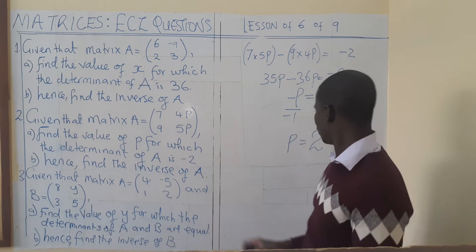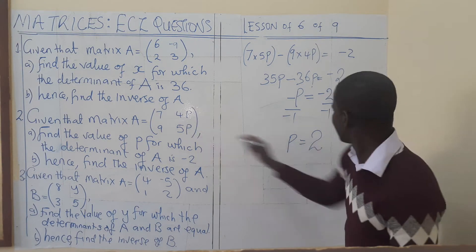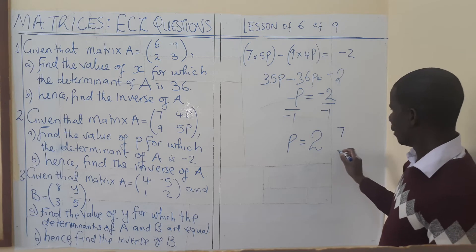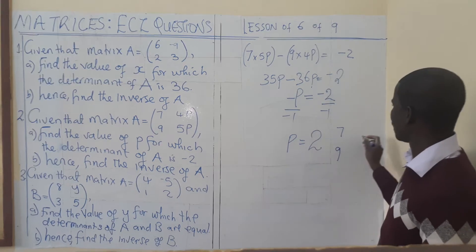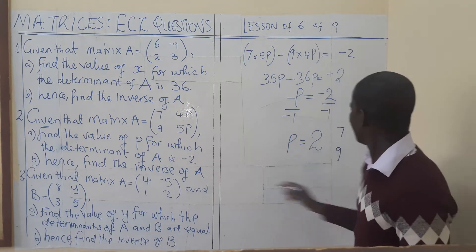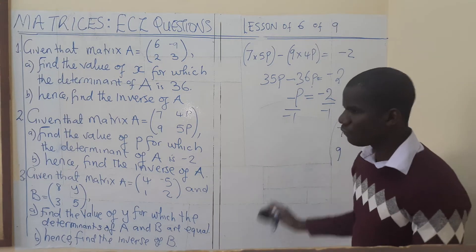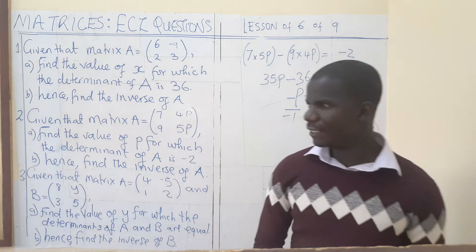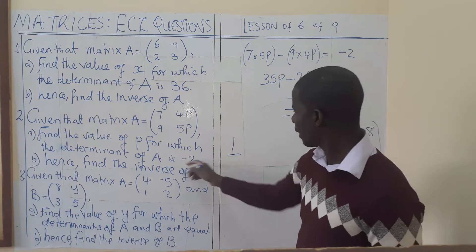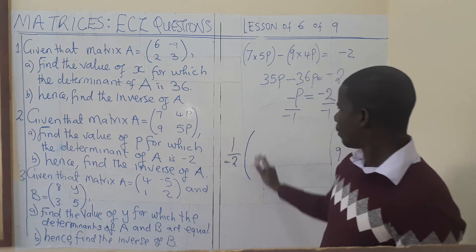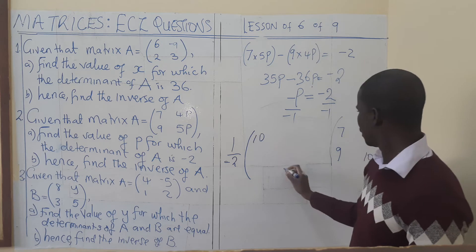Now we find the inverse. With P equal to 2, this matrix becomes 7, 9, and 4 multiplied by 2 gives 8, and 5 multiplied by 2 gives 10. To find the inverse, we say 1 over the determinant — which is negative 2 — multiplied by the adjoint. The major diagonal elements swap: 10 and 7 exchange positions, and the minor diagonal elements change their signs, giving negative 8 and negative 9.